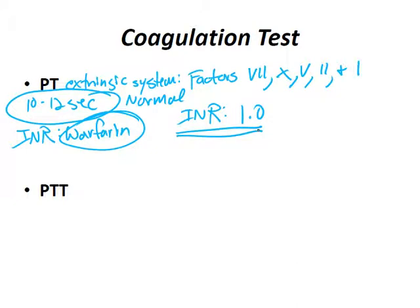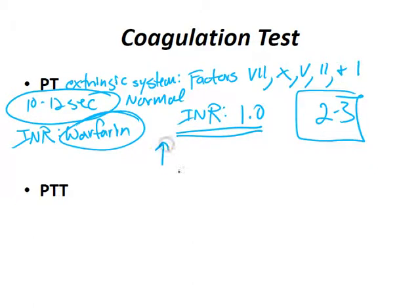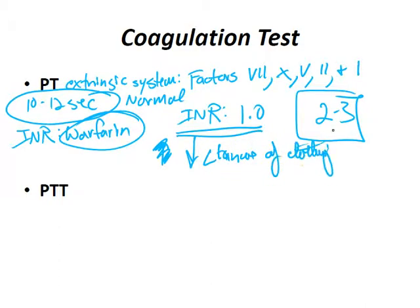An elevated INR — when you get asked about this in the hospital, they'll ask what you want your INR to be for a patient on warfarin, and the answer is 2 to 3. Whenever you have an elevated international normalized ratio, that means there's a relative increase in anticoagulation — a decreased chance of clotting.